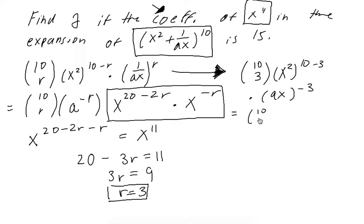10 choose 3, x to the, this is going to be 2 times 7, so x to the 14th, times a to the negative 3, times x to the negative 3. So we can distribute the negative 3 within this bracket to each of the elements. So we have 14 minus 3, so it's going to be x to the 11th.